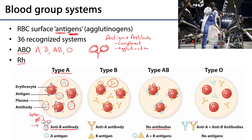People who are type O — and 'O' was originally meant to be zero, not the letter O — have no A or B antigens on the surface of their red blood cells, yet they have both anti-A and anti-B antibodies within their plasma.